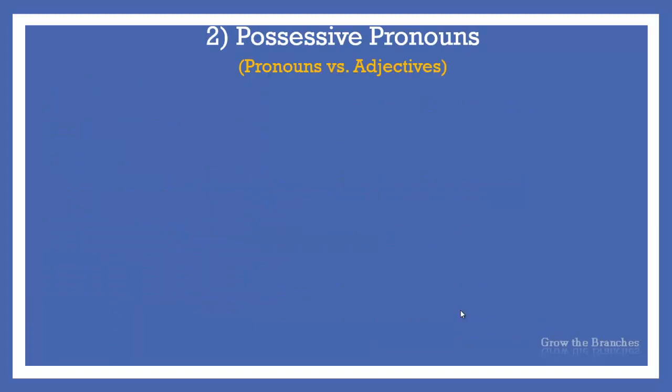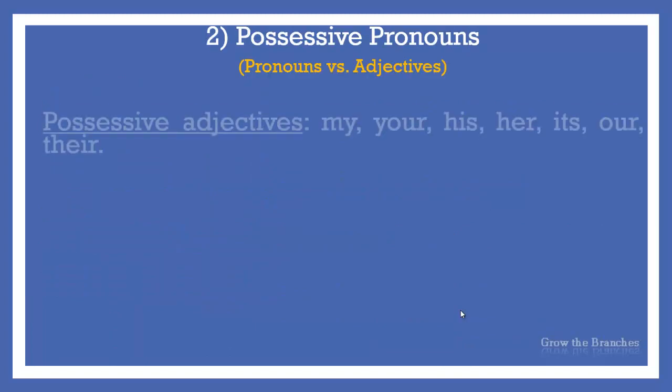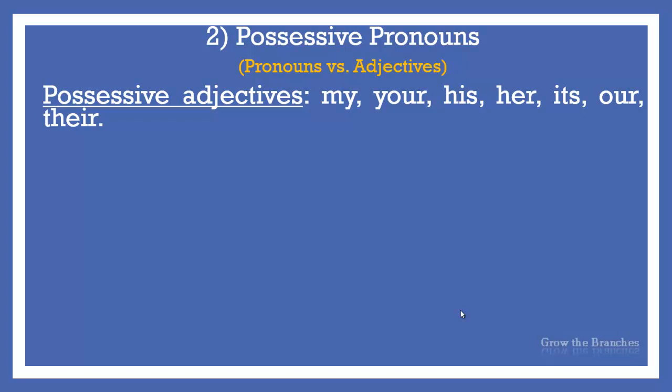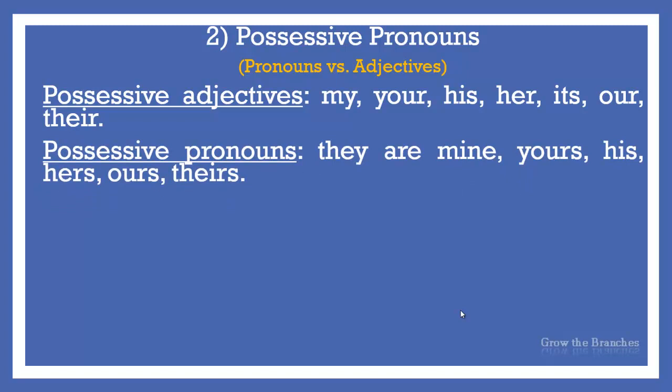Possessive pronouns. You need to make the difference between possessive adjectives and possessive pronouns. Possessive adjectives take place before nouns — they are my, your, his, her, its, our, and their. Possessive pronouns replace nouns — and they are mine, yours, his, hers, ours, and theirs.